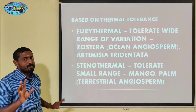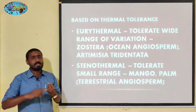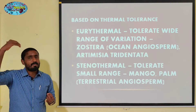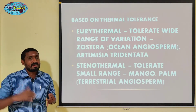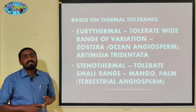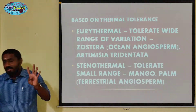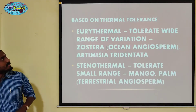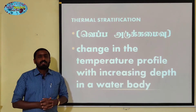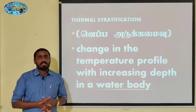We have three types of classification: first, minimum, optimum, and maximum; second, Rankier's classification; and third, based on thermal tolerance — Eurythermal and Stenothermal. This is the first classification. Thermal stratification — we are going to cover terrestrial conditions with temperature variation.